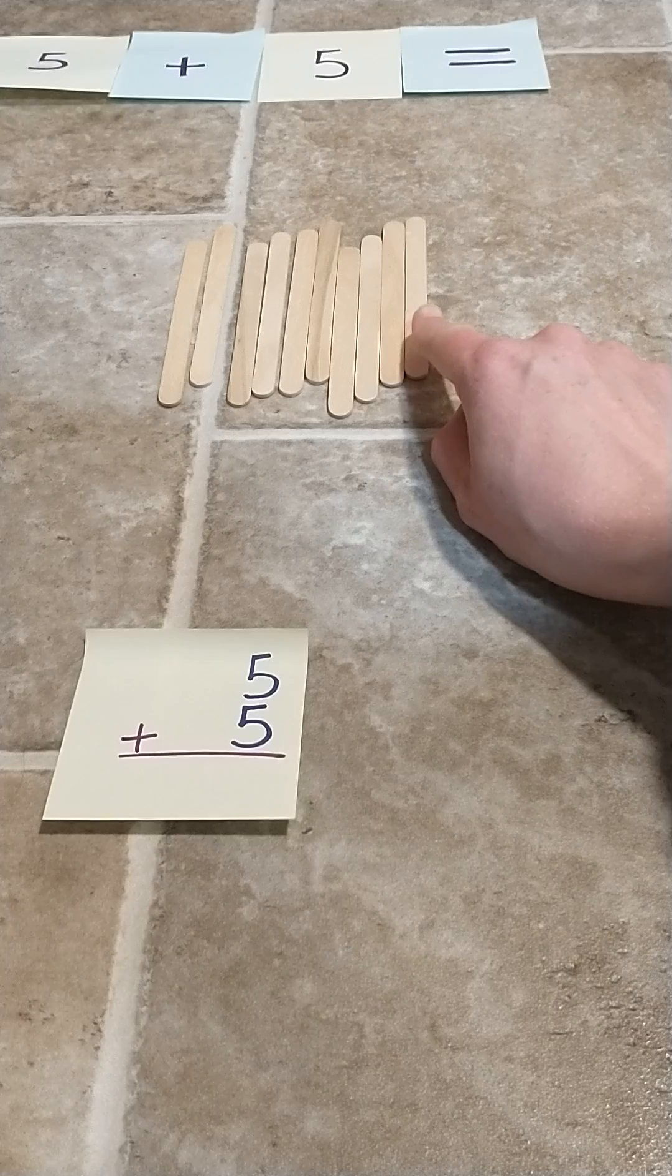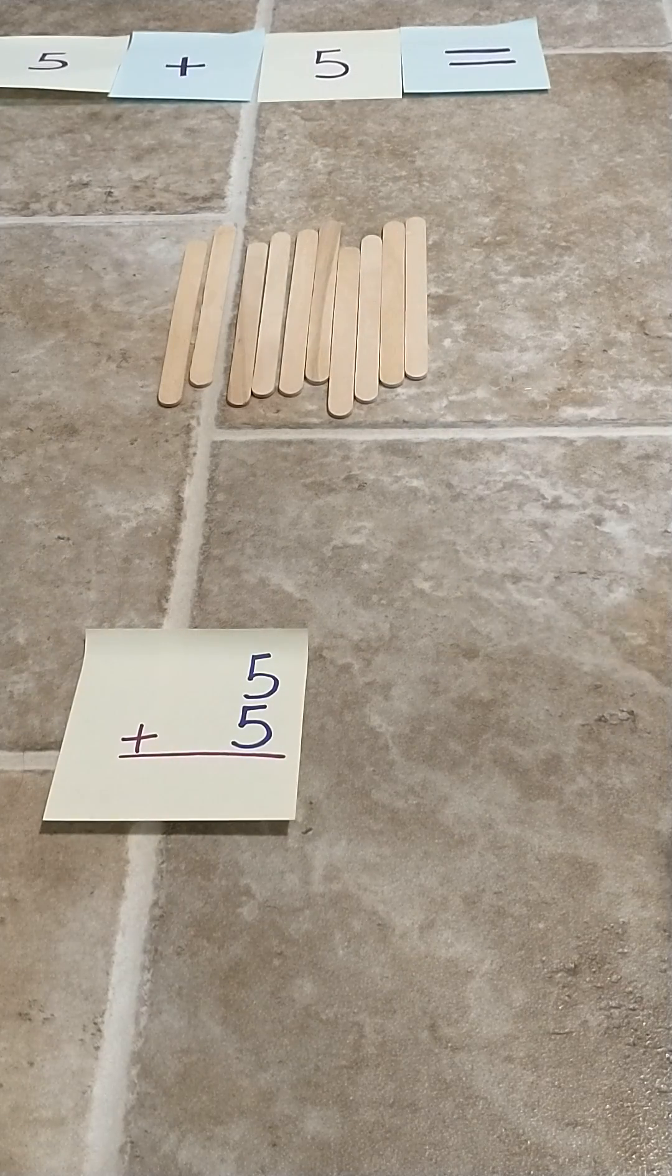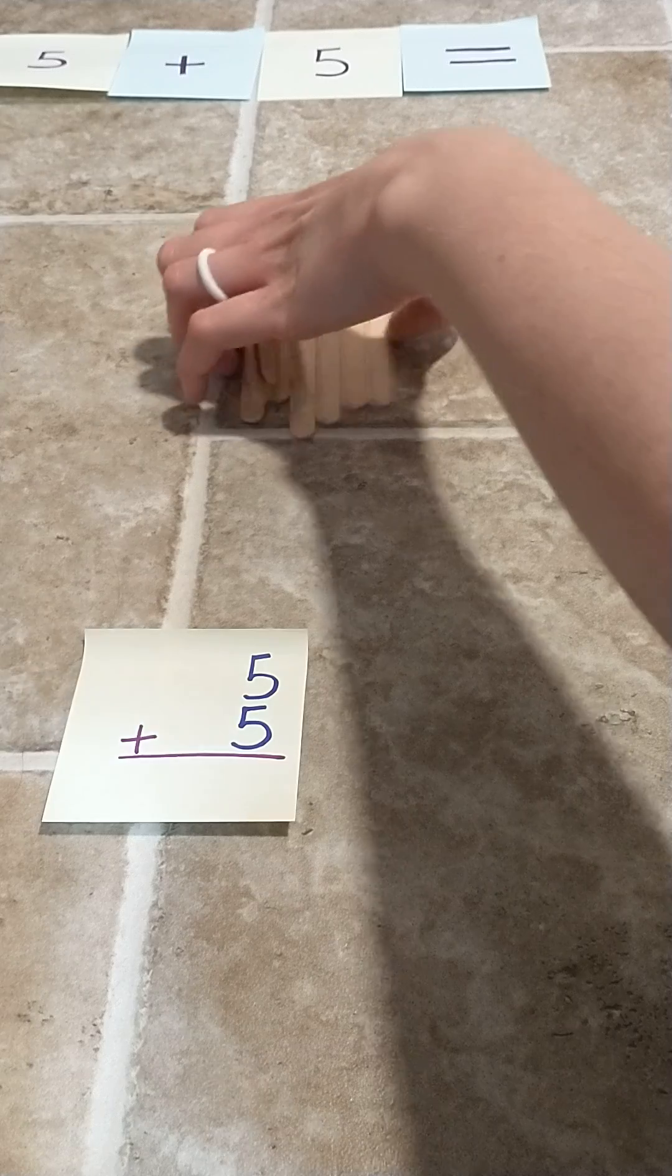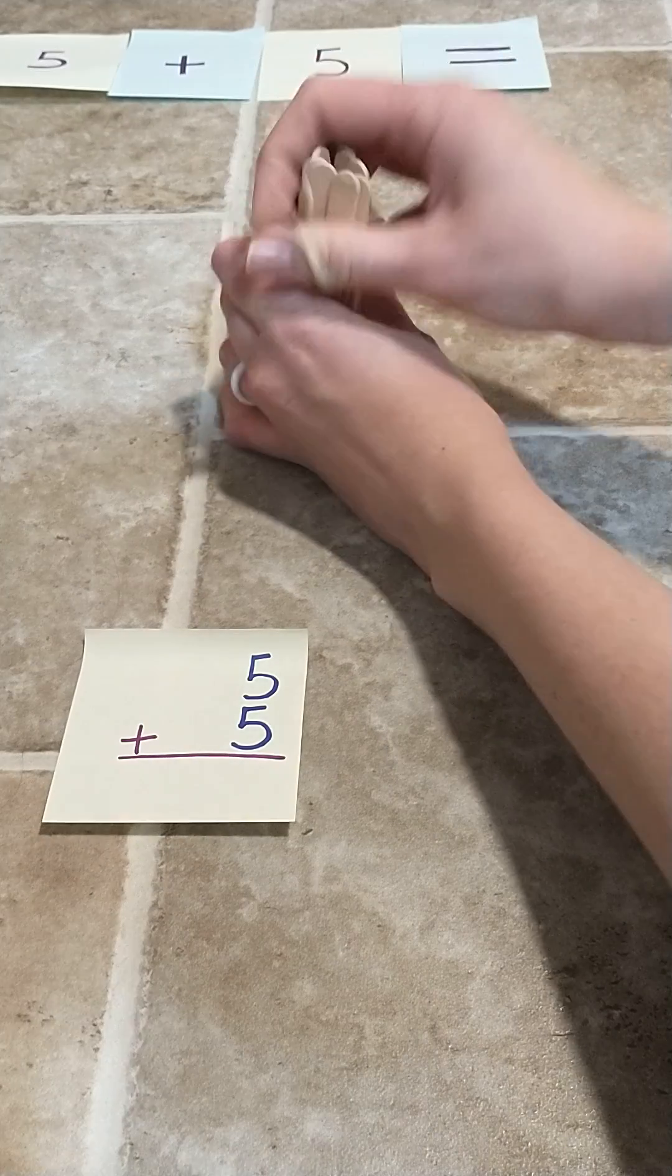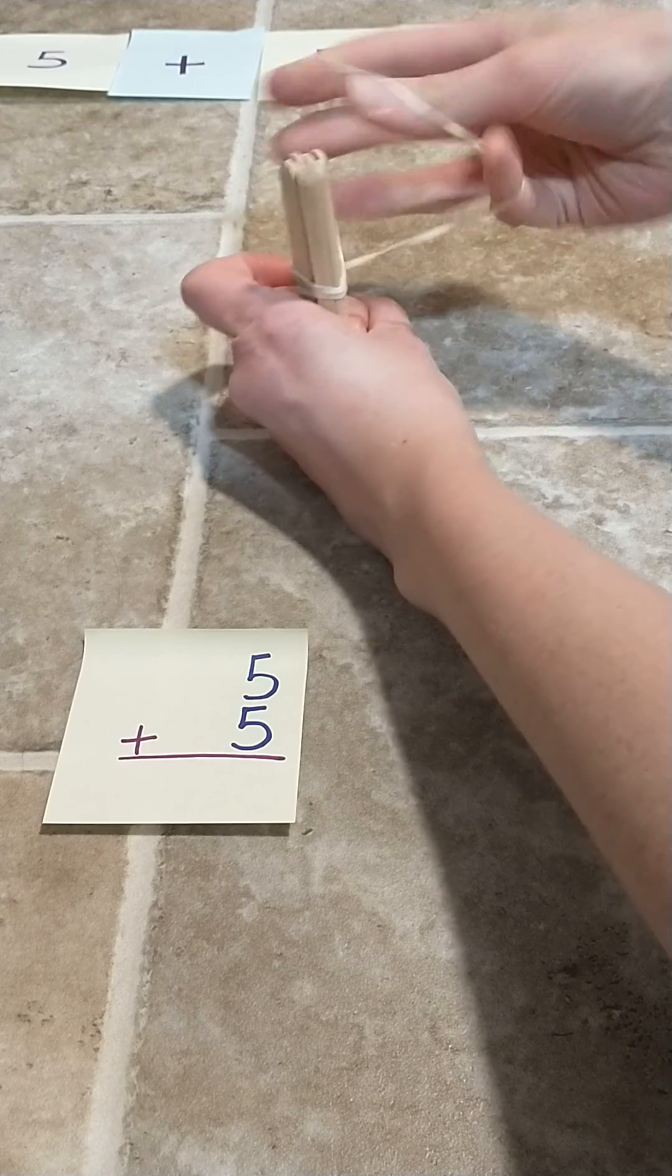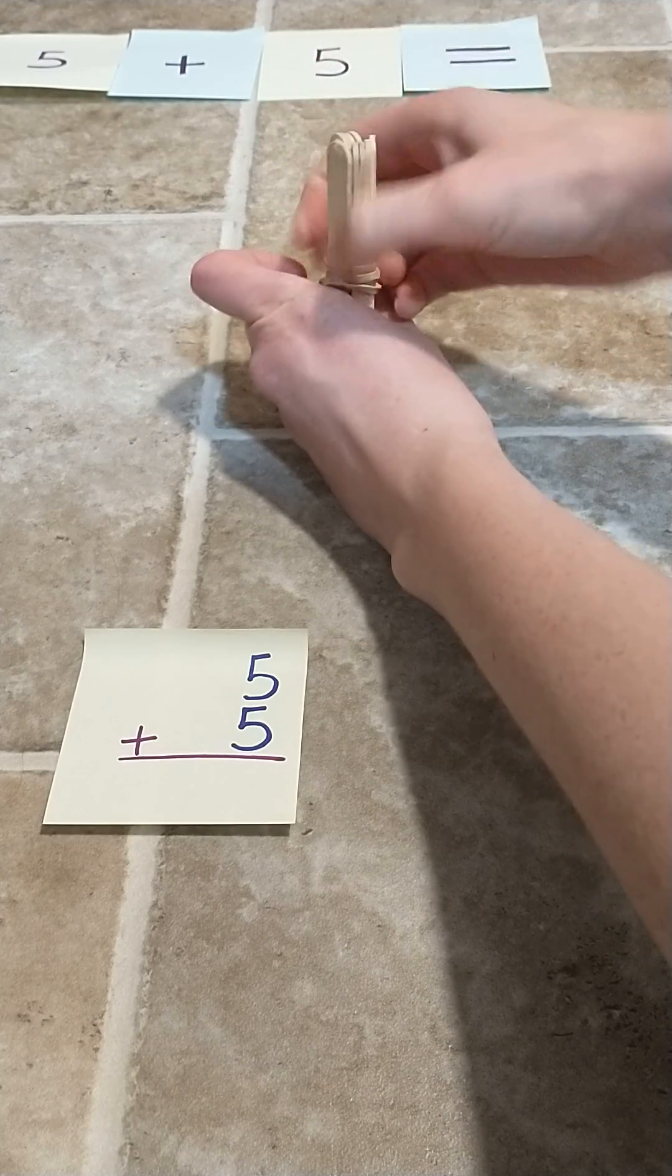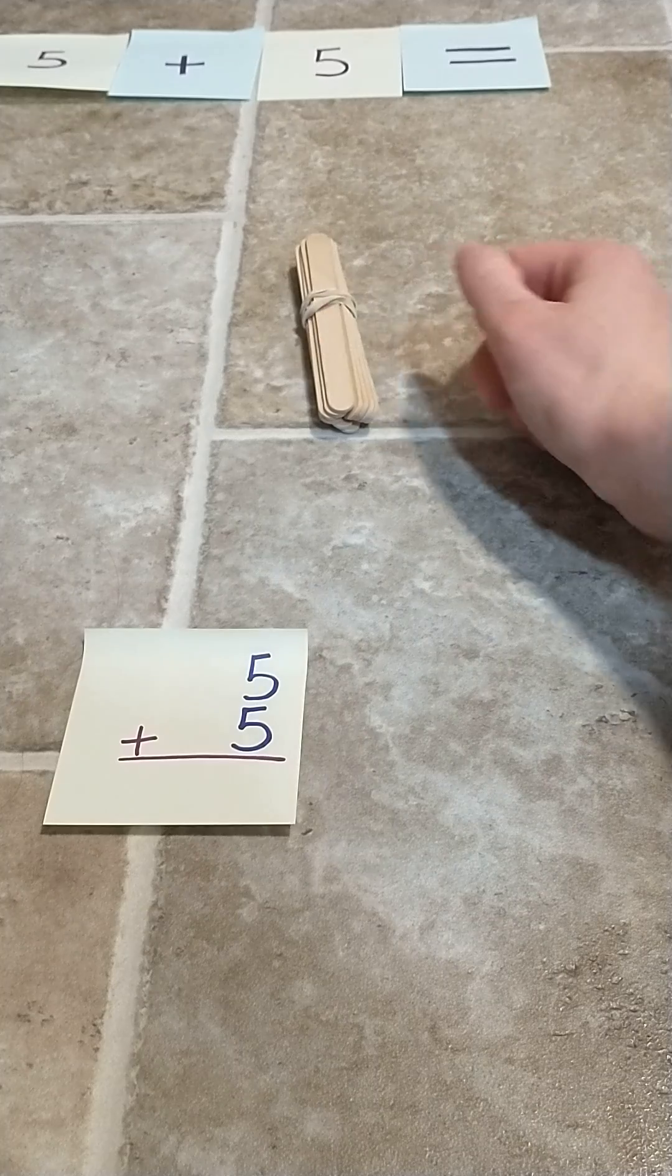So our answer is ten. And something special happens when we get to the number ten with popsicle sticks. We're going to take them all and bundle them up together to make one group of ten, and that is our answer.